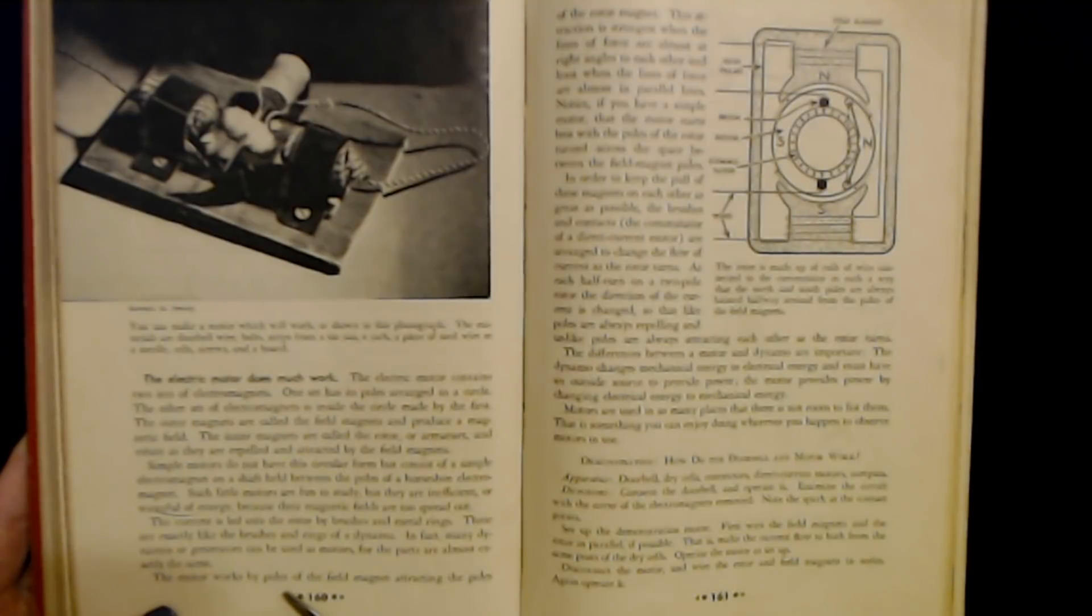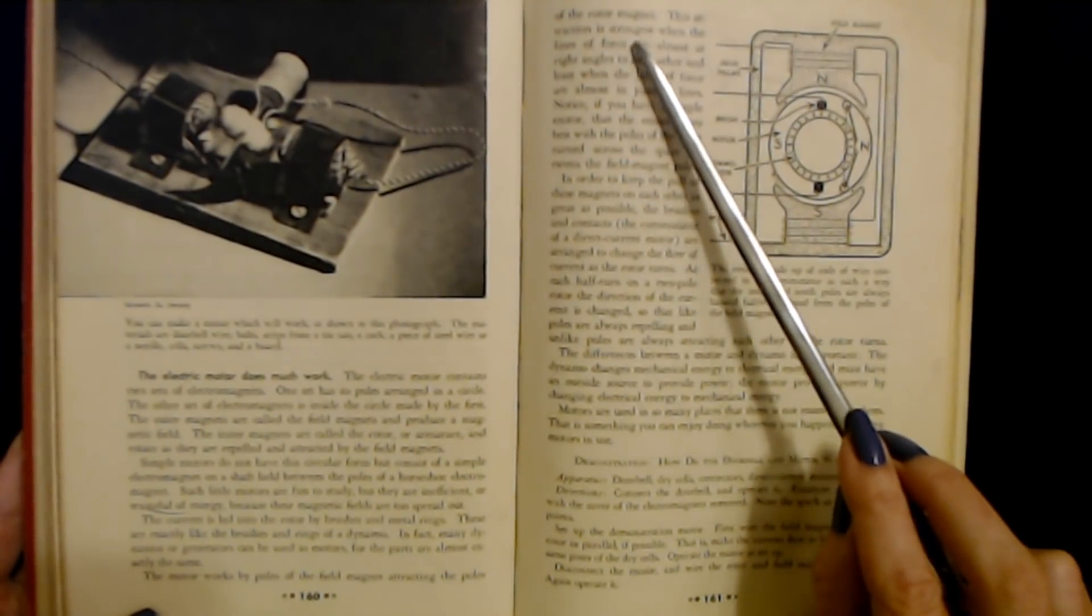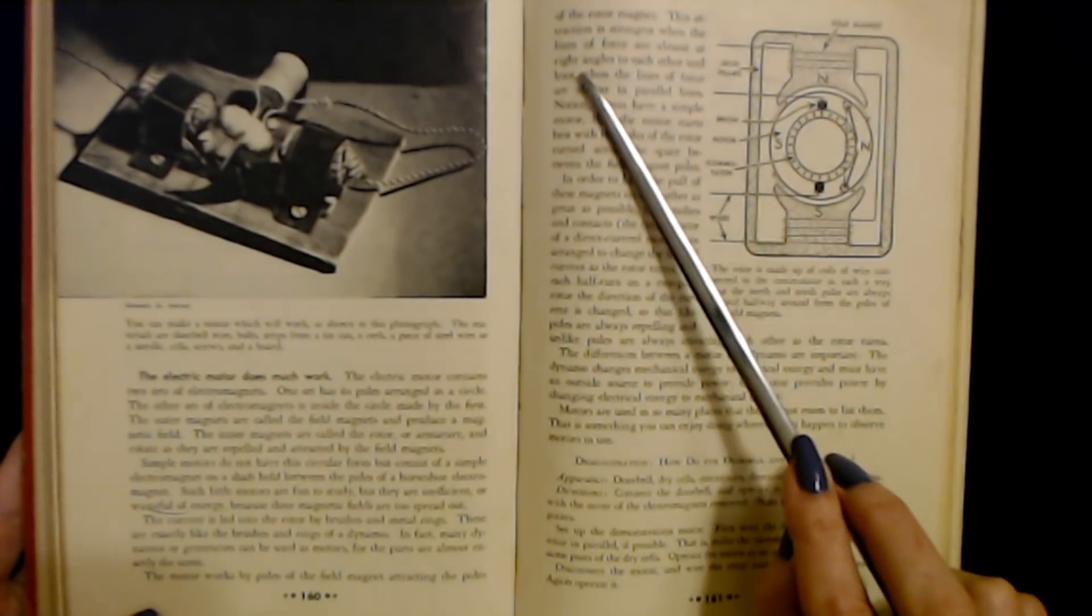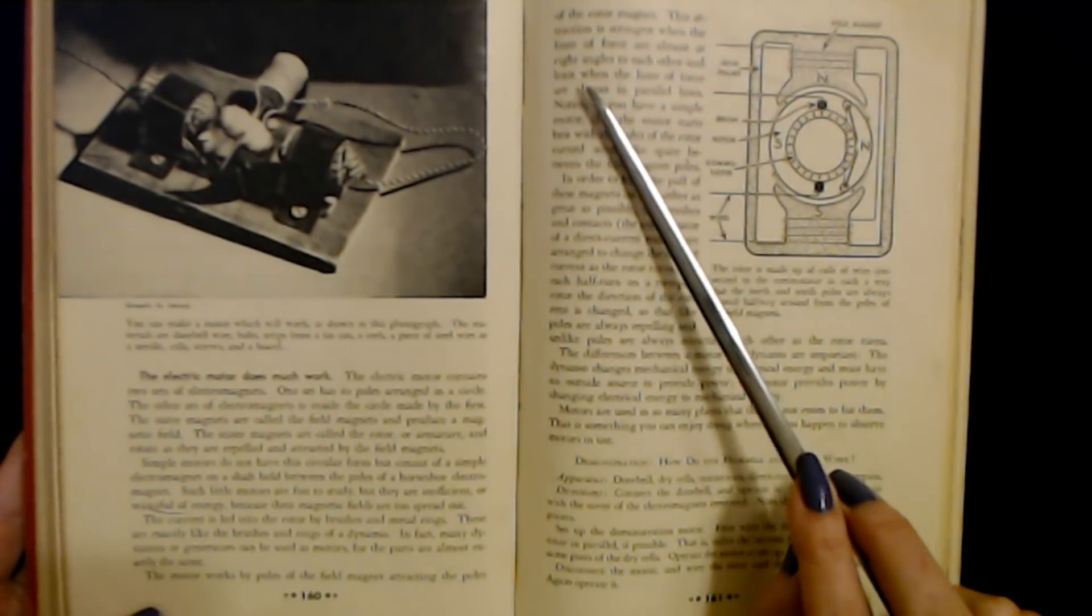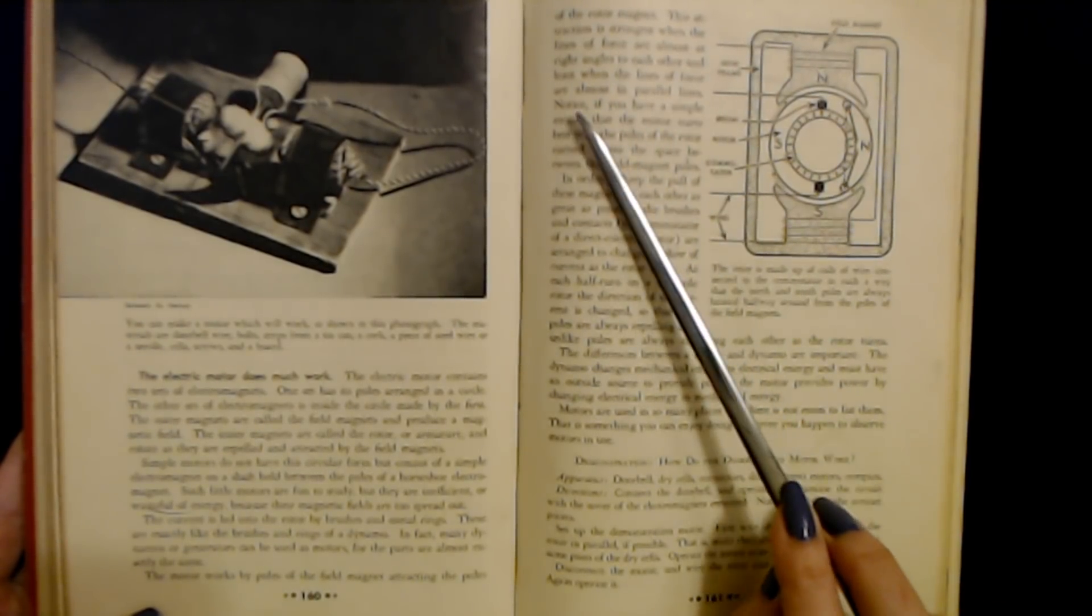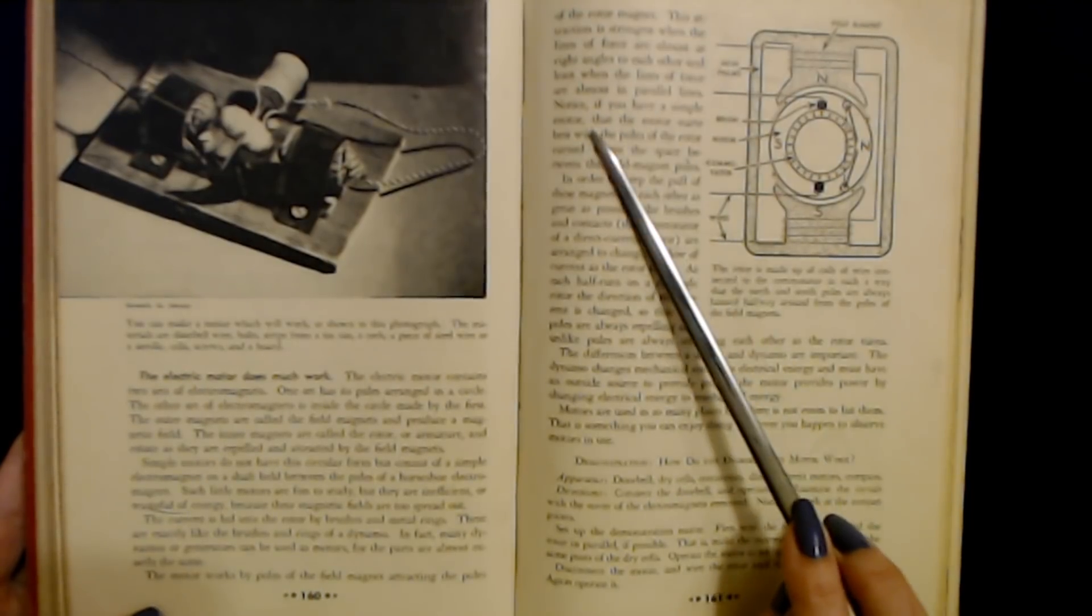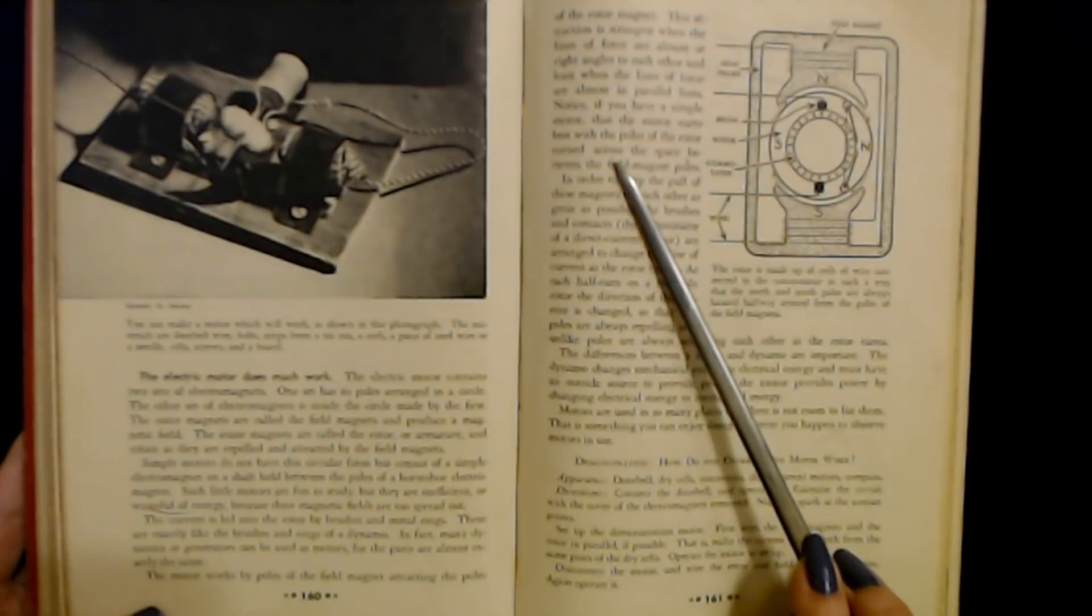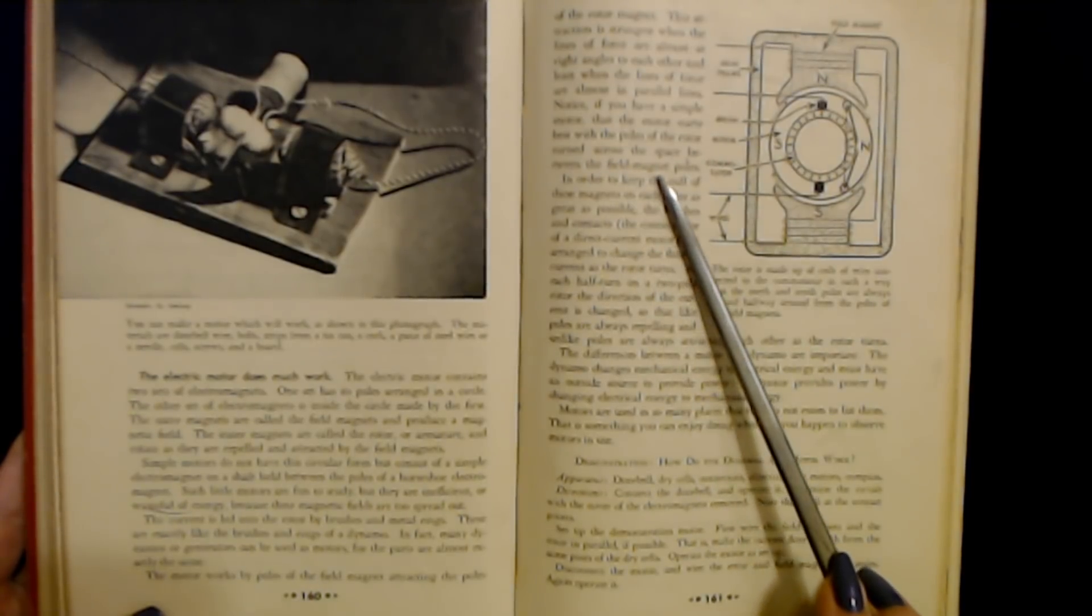The motor works by poles of the field magnet attracting the poles of the rotor magnet. This attraction is strongest when the lines of force are almost at right angles to each other, and at least when the lines of force are almost in parallel lines. Notice, if you have a simple motor, that the motor starts best with the poles of the rotor turned across the space between the field magnet poles.